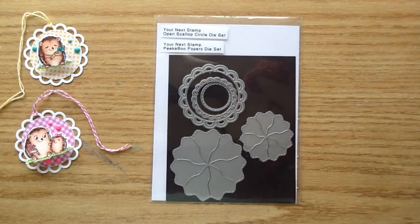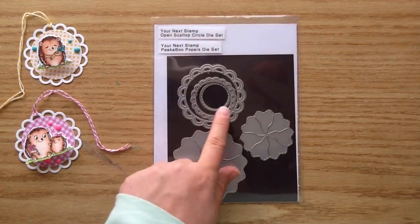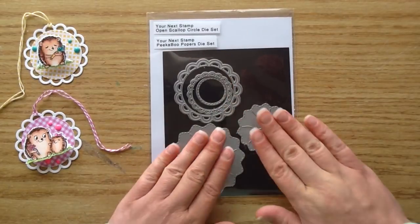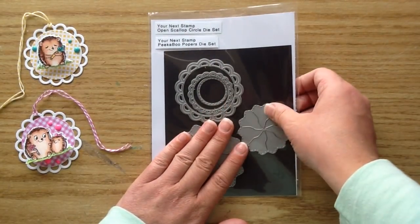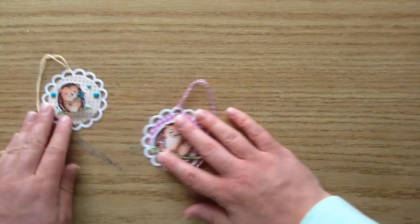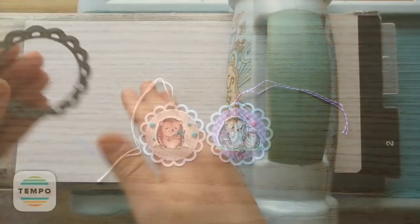And then I pulled in an older die set. This is by Your Next Stamp as well. It's the open scallop circle die set and it's these ones here. These ones at the bottom here are the peekaboo poppers. So it's just these three dies and I just use the largest sized one there for this project and it made such a cute little tag. I love how it looks so much. It's so summery and cutesy.